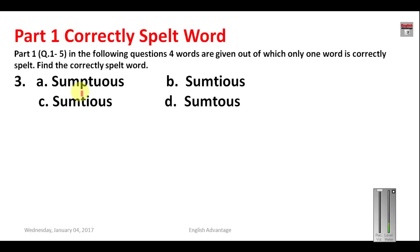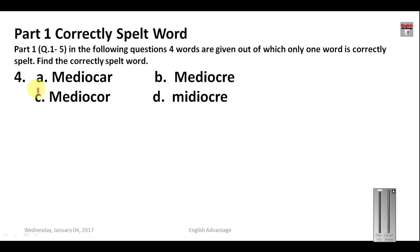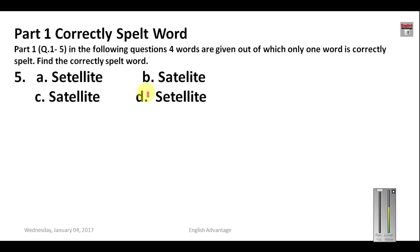The correct spelling of 'sumptuous' is S-U-M-P-T-U-O-U-S, so your answer for question 3 is A. Question 4: 'mediocre' means average, not very good. The spelling is M-E-D-I-O-C-R-E, so your answer is B. Question 5: 'satellite' — the correct spelling is S-A-T-E-L-L-I-T-E, so your answer will be C.